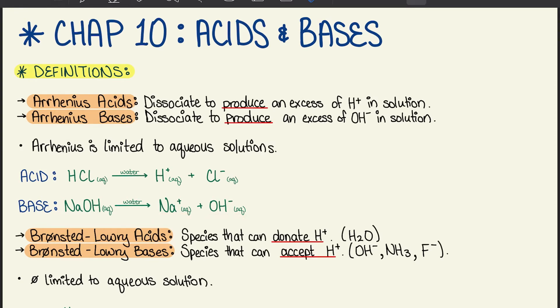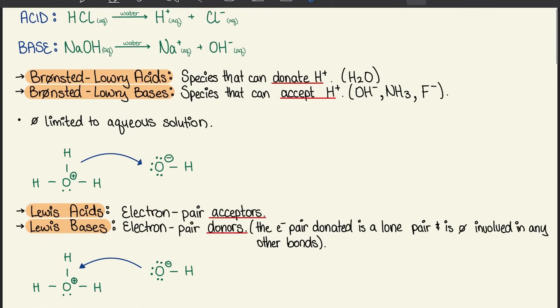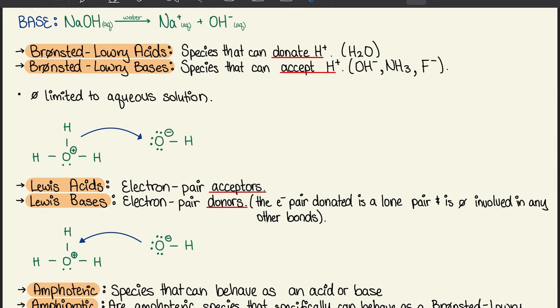With Bronsted-Lowry acids, we have species that can donate hydrogen ions, usually water. With Bronsted-Lowry bases, we have species that can accept these hydrogen ions, like hydroxide ions, NH3, or F-. These are not limited to aqueous solutions.